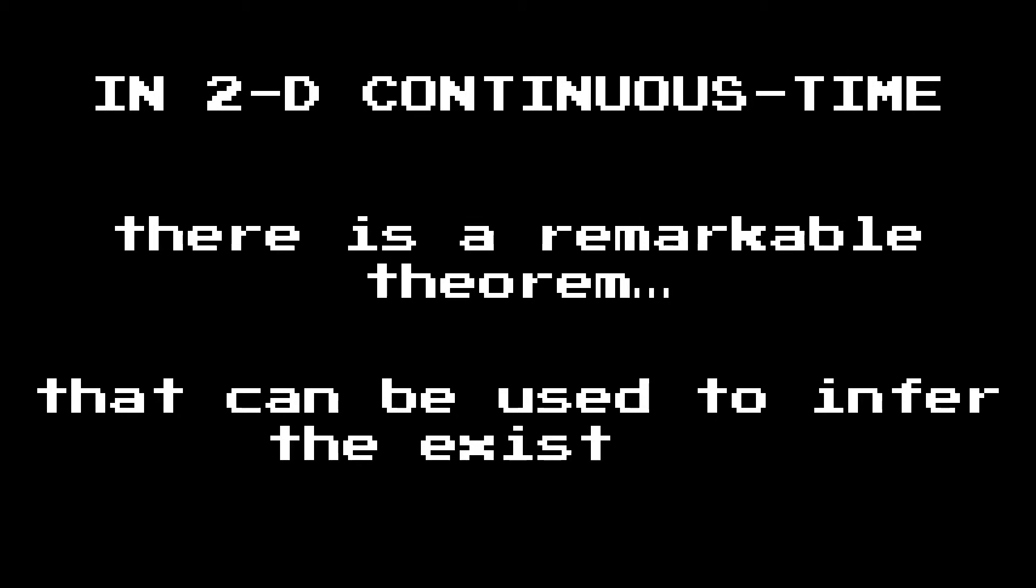If you happen to be in 2D continuous time, there is a remarkable theorem that is helpful when you're trying to prove that there is a limit cycle somewhere in your system, as opposed to trying to rule it out.